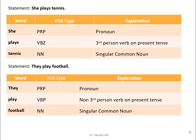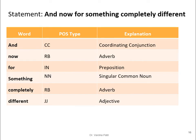We should be able to identify POS categories roughly. For example, in 'And now for something completely different': 'and' is coordinating conjunction (CC); 'now' is adverb (RB); 'for' is preposition (IN); 'something' is singular common noun (NN); 'completely' is adverb (RB); and 'different' is adjective (JJ).